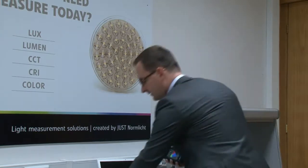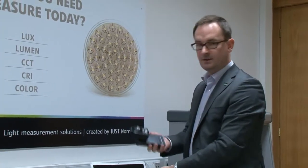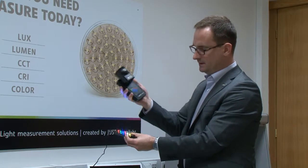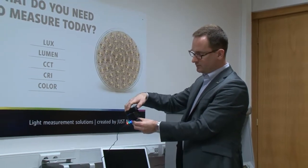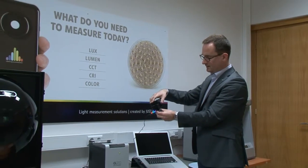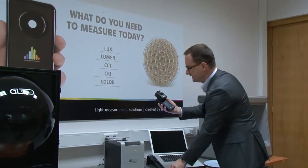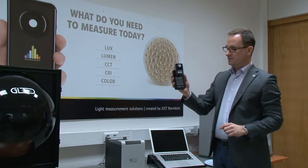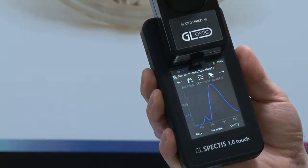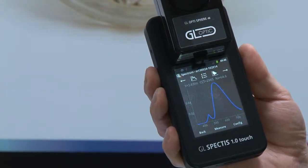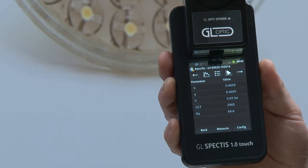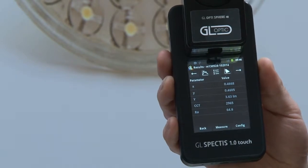This is just an example of LEDs which we can measure. I am covering one of these LEDs with our integrating sphere, pushing the measurement button, and then I get the results directly on the screen. I have the spectral power distribution, and the selected values which are: XY color coordinates, lumen output, color temperature, and CRI index.